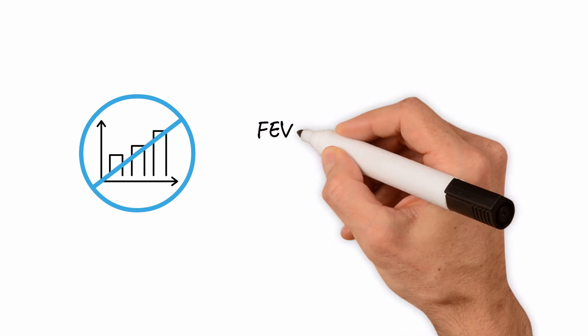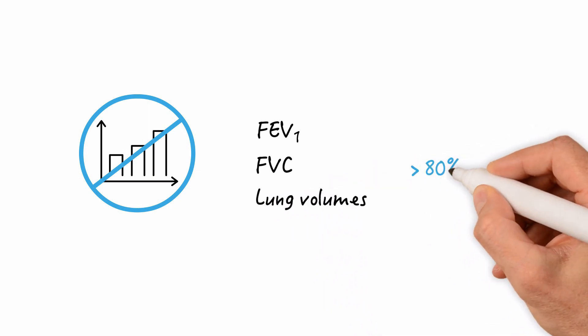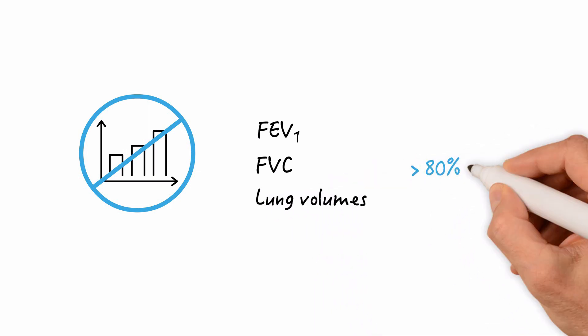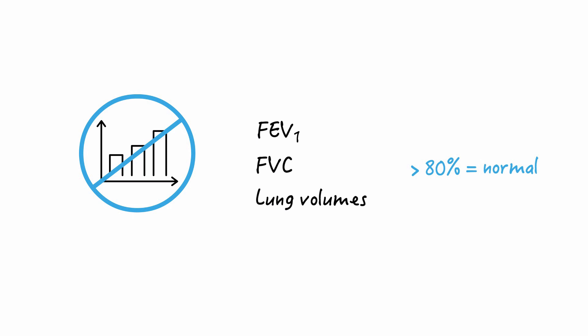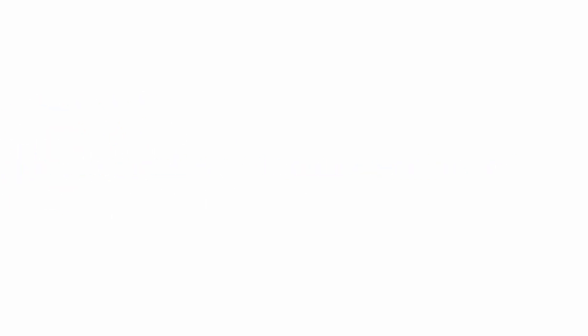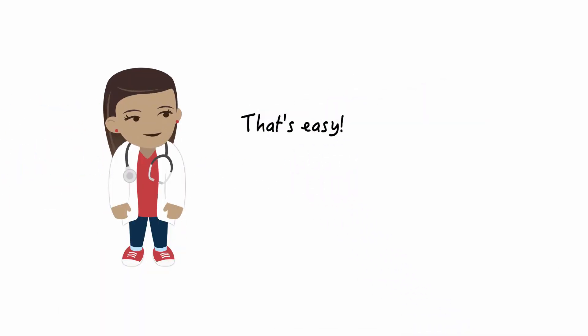Traditional pulmonary function test interpretation lacks statistical validation and is based on values for FEV1, FVC, and lung volumes greater than 80% predicted considered as normal. While such methodology is easy to remember and apply, misclassification as normal or abnormal may occur.